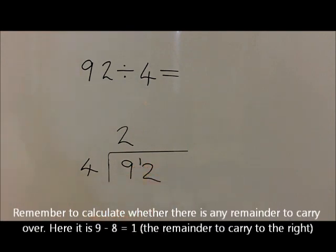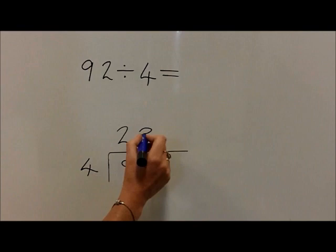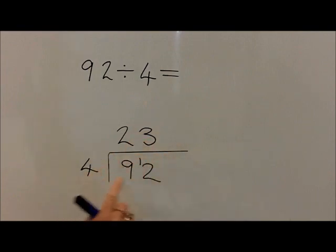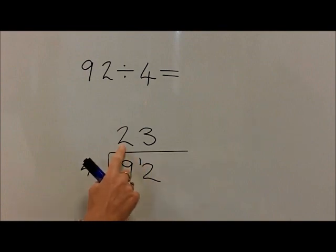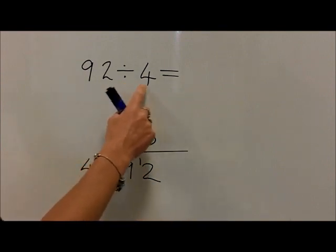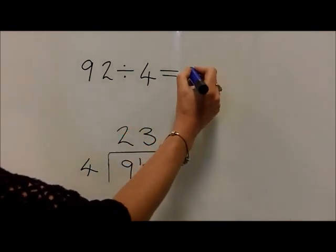We now ask the question how many 4's are in 12. Children should know that 3 times 4 is 12. There's therefore nothing to carry, so this is the final answer: 23. So 92 divided by 4 is equal to 23.